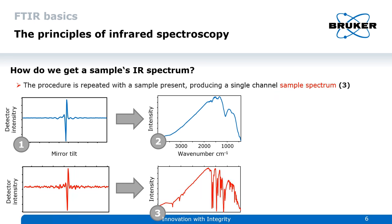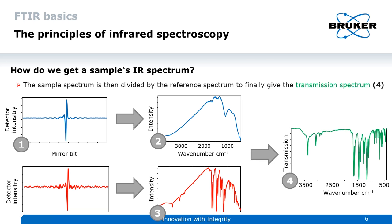But this time it's a sample spectrum. Then we only have to combine both spectra by dividing the sample spectrum by the reference spectrum, and then we have the classic view of an FTIR transmission spectrum.